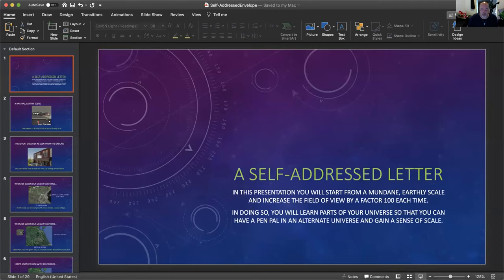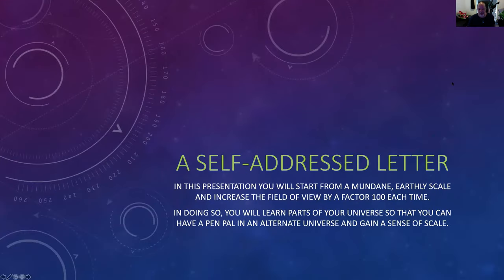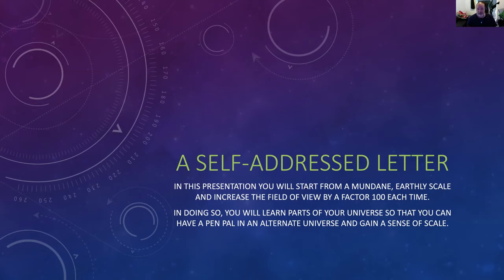Let me go ahead and share my screen with you. In this presentation, you will start from a mundane earthly scale and increase the field of view by a factor of 100 each time. In doing so, you will learn parts of our universe and gain a sense of scale. We're going to take a starting field of view of about 16 meters by 16 meters, or roughly 52.8 feet by 52.8 feet. The next one will be 100 times taller and 100 times wider. So instead of 52.8, it'll be 5,280 by 5,280 — which you recognize as a mile. Let's begin.